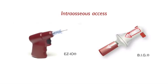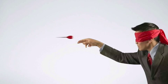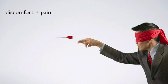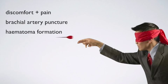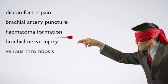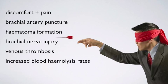Unfortunately, sometimes whatever you do, you are not able to visualize or palpate any veins. Often in such scenarios, subsequent IV cannulation attempts, most commonly in the antecubital fossa, are performed blindly. You are trying to hit a vein, relying on your experience and knowledge of anatomy and landmarks. Unfortunately, this suboptimal practice results in increased rates of complications such as patient discomfort and pain, brachial artery punctures, hematoma formation, brachial nerve injury, venous thrombosis, and increased blood hemolysis rates.